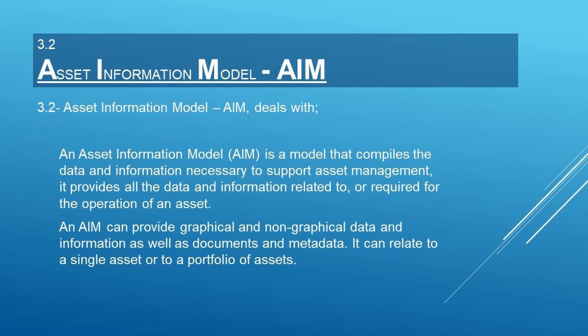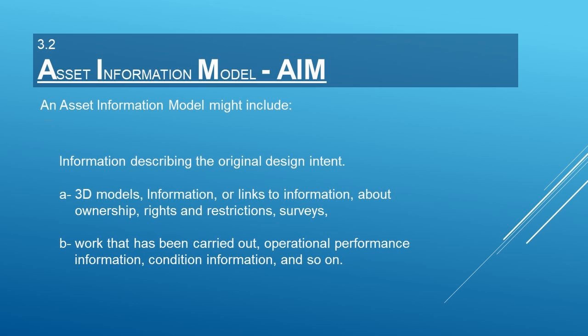The Asset Information Model, AIM, compiles the data and information necessary to support asset management. It provides all the data and information related to or required for the operation phase of an asset. AIM can provide graphical and non-graphical data and information, as well as documents and metadata, that can relate to a single asset or a portfolio of assets. The AIM might include information describing the original design intent, 3D models, information about ownership, rights and restrictions, surveys, work that has been carried out, operational performance information, and condition information.